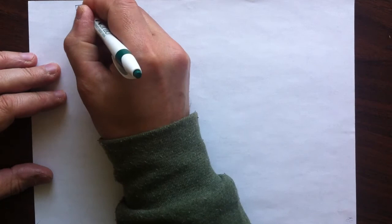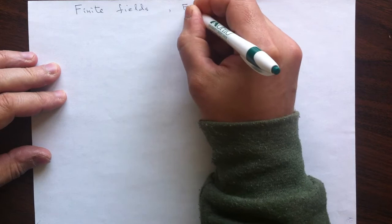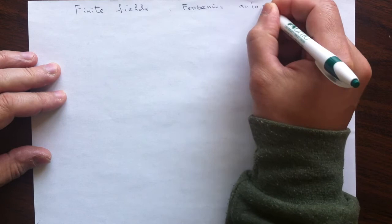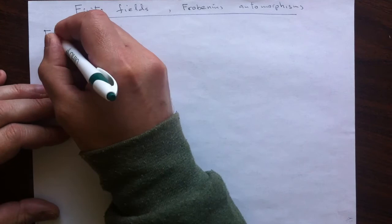This little video is about the structure of finite fields and the symmetries, or automorphisms. So let's start with a finite field. We looked into that before.